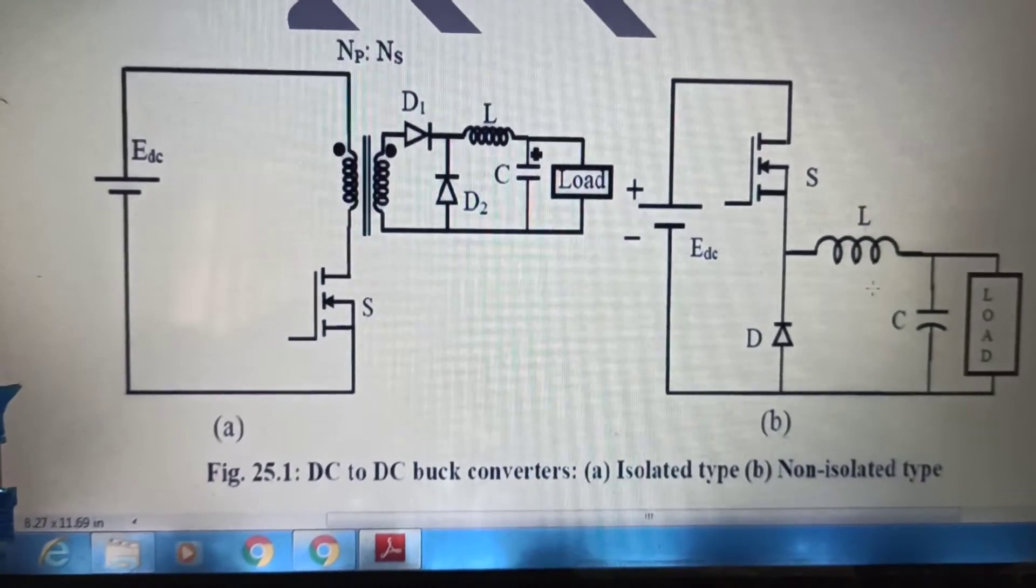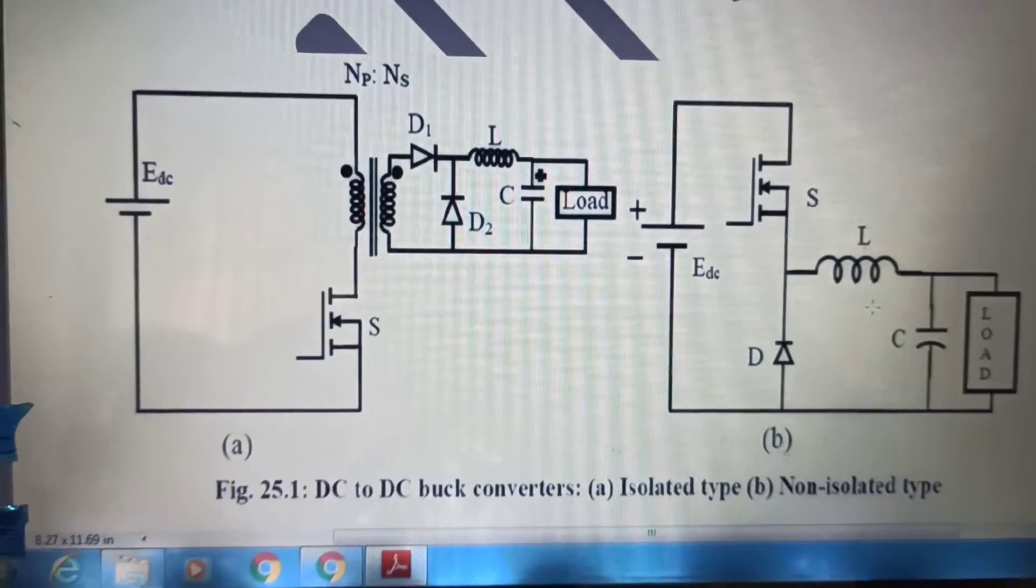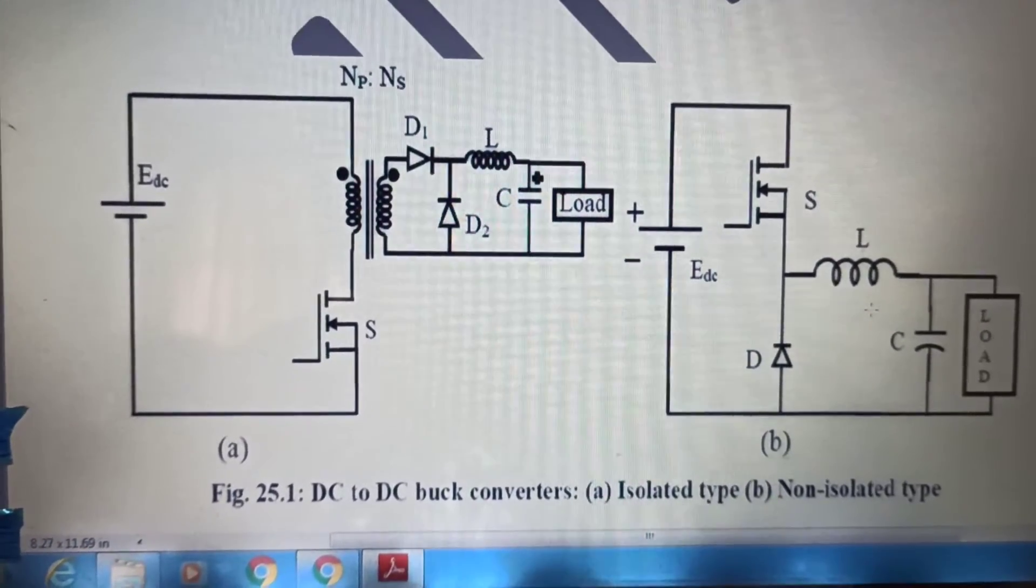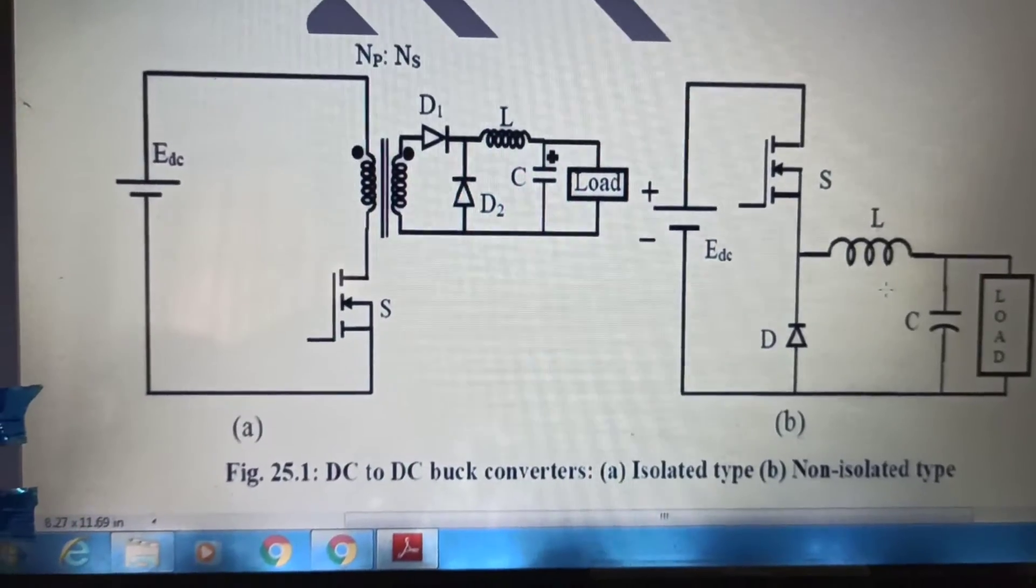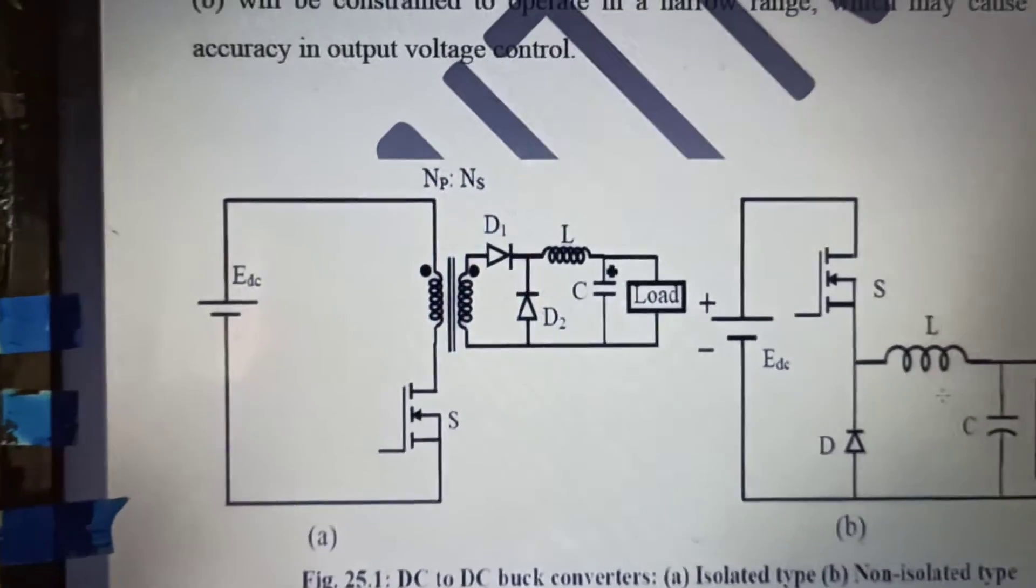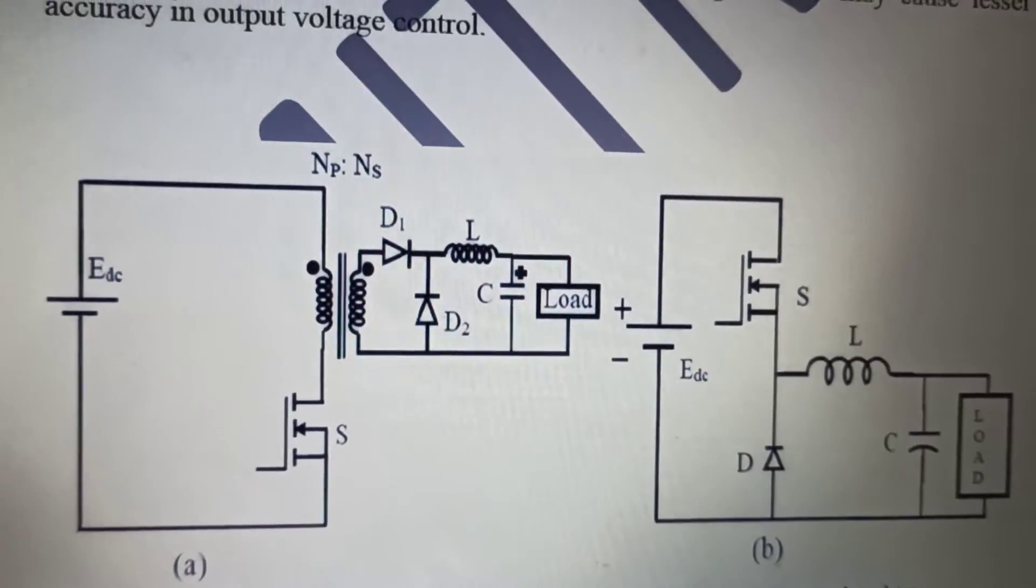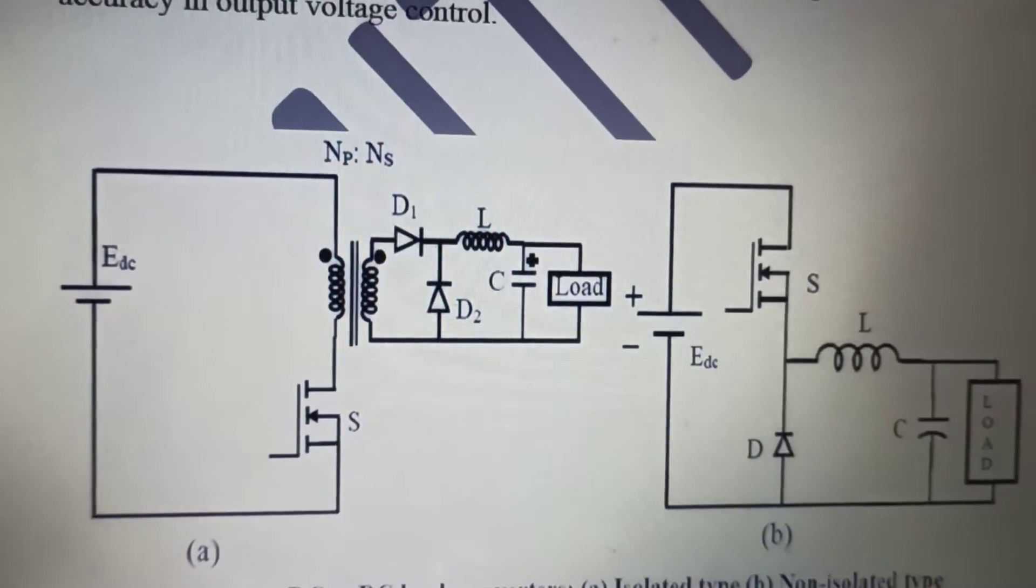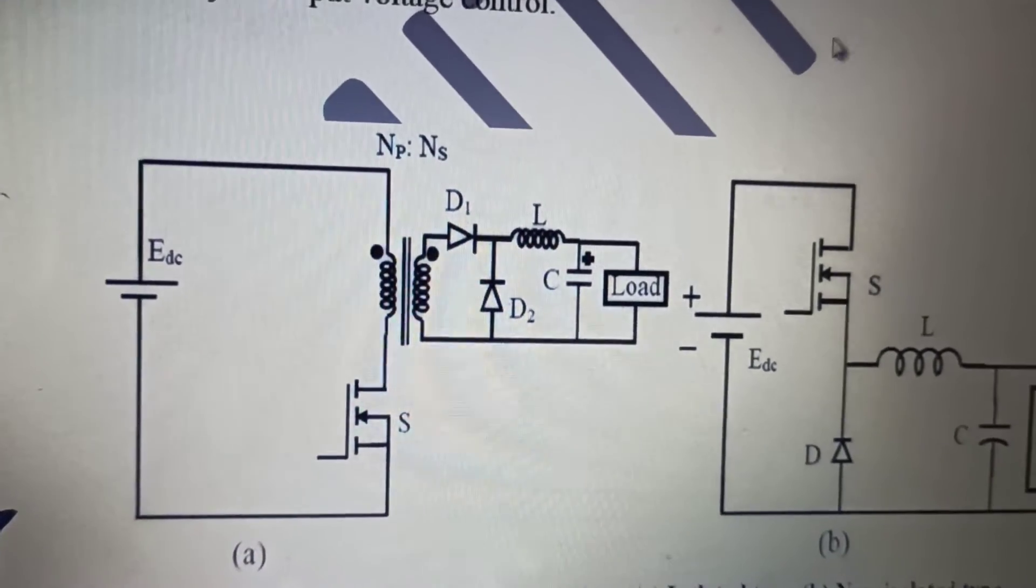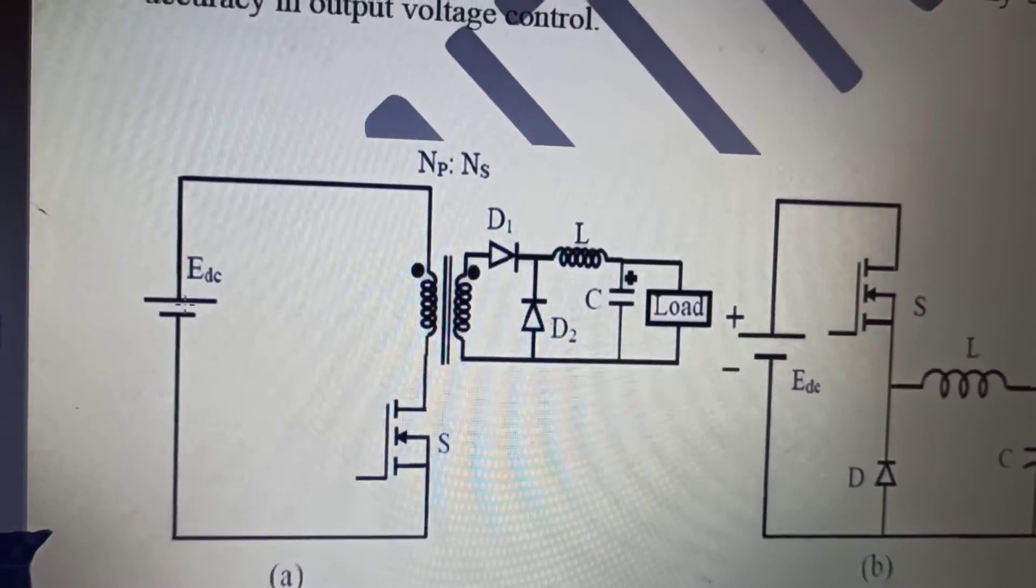And that transformer is basically which separates the diode circuit that is D2, L and capacitor both from the switch and thus DC supply. So, we should very well understand this thing.